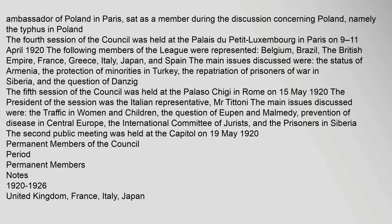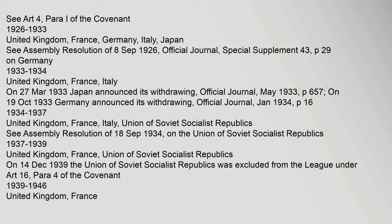Permanent members of the Council: 1920–1926 — United Kingdom, France, Italy, Japan (per Art. 4 of the Covenant); 1926–1933 — United Kingdom, France, Germany, Italy, Japan (per Assembly Resolution of 8 September 1926, Official Journal, Special Supplement 43).